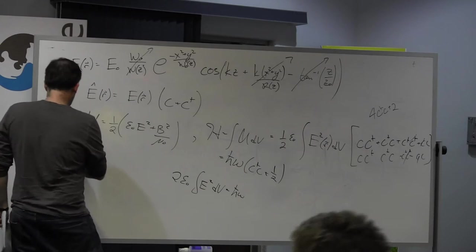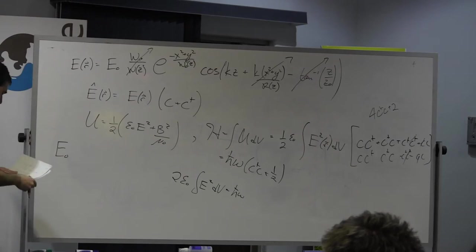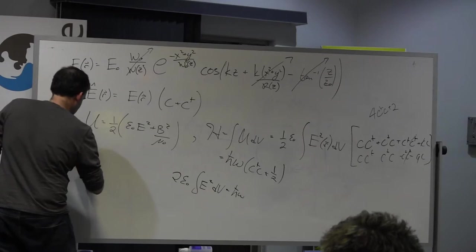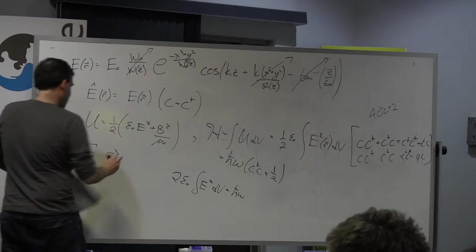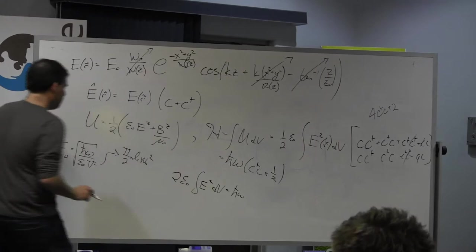And you end up with the definition that the electric field, this quantity E naught, in order to make this thing properly normalized would be h-bar omega over epsilon not times some volume, and by this volume I mean pi over two times L times W zero squared.